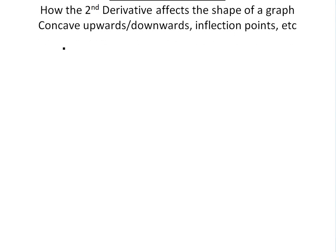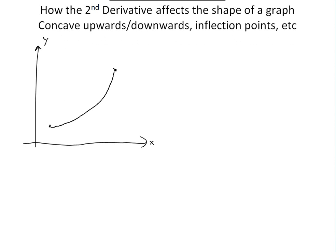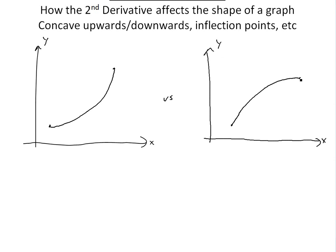Let's start off with two functions to compare. You have one function that's increasing and going upward like this, and then versus another one that's also always increasing, but going down like this. Both of these are increasing, and from the first derivative test, the first derivative is greater than zero, meaning it's always increasing. But as you can see, the shape looks different.